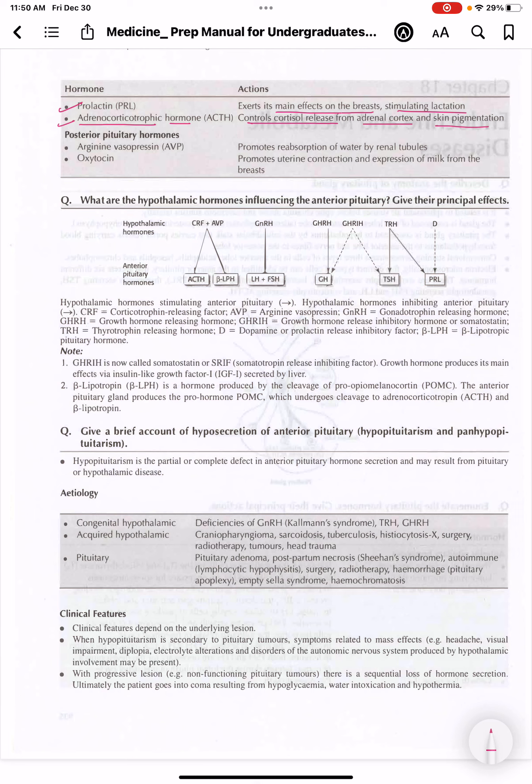First one is arginine vasopressin, which is ADH - antidiuretic hormone, also known as vasopressin. It promotes reabsorption of water by renal tubules. The main point is it only reabsorbs water and not the electrolytes.